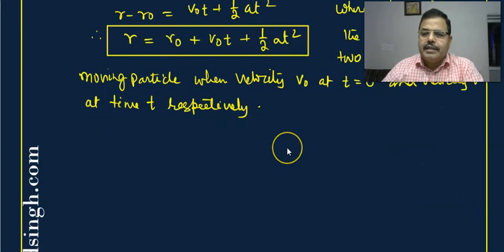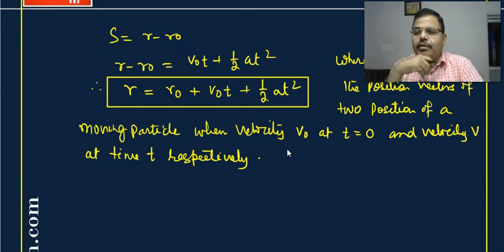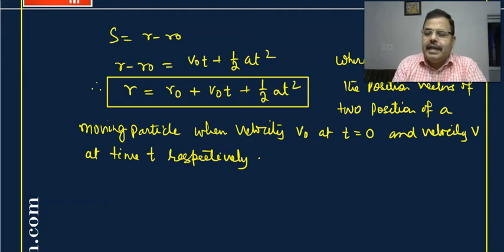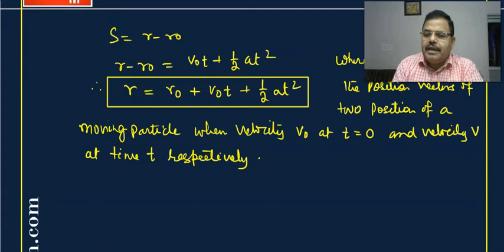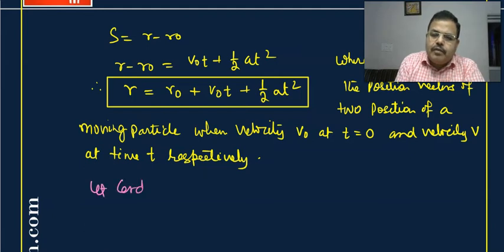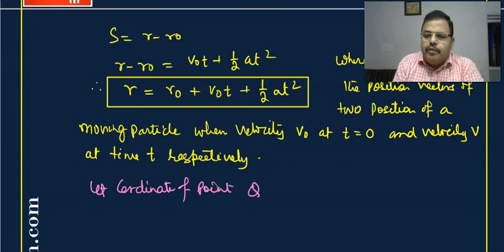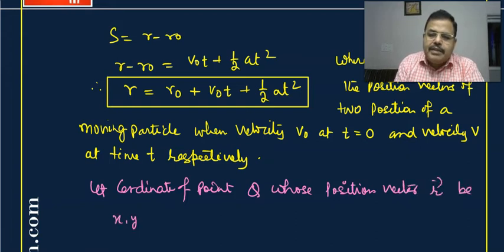आप इस तरह से calculate कर सकते हैं। आप position vector को two-dimensional motion में r = xi + yj की तरह लिख सकते हैं, जिसमें x और y components होते हैं। मान लेते हैं point q का position vector r है जिसके coordinates (x, y) हैं, और initial point p के coordinates (x₀, y₀) हैं।